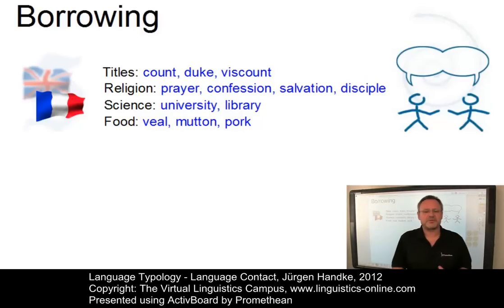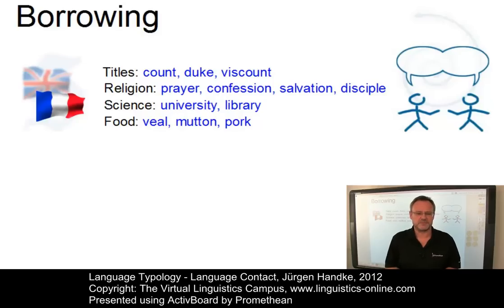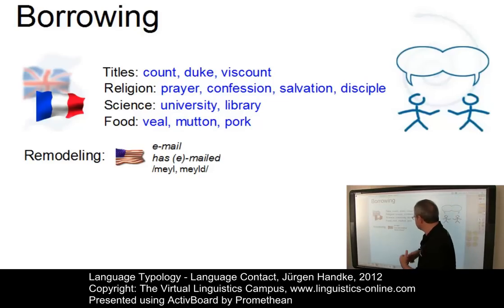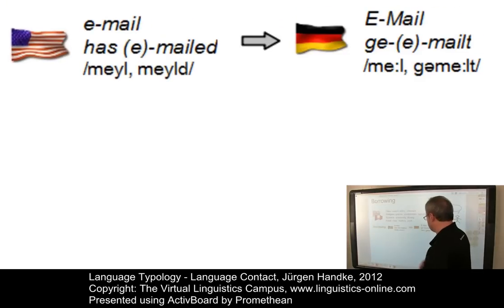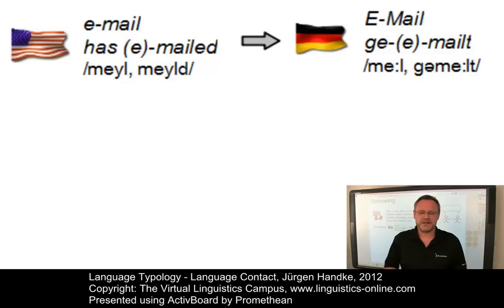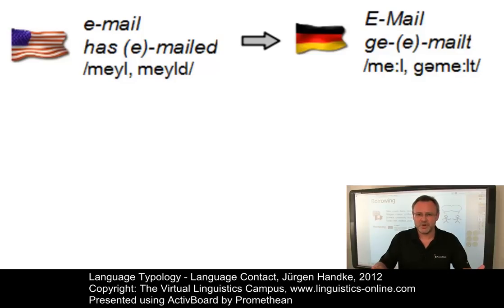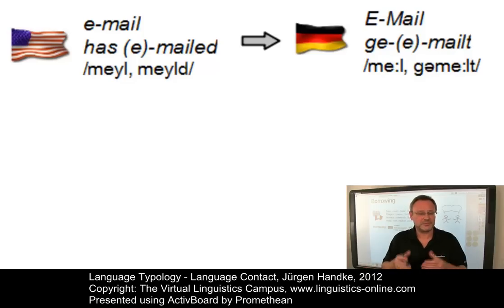The integration of borrowed items involves their remodeling to fit the phonological and morphological structure of the recipient language. Take the word e-mail and the past participle e-mailed in the form 'he has e-mailed.' In my mother tongue German, the noun is E-Mail and the past participle is ge-e-mailt or gemelt. This matches the German principles of final devoicing and its system of verbal inflection. And the vowel is no longer a diphthong but a mid-high front vowel.